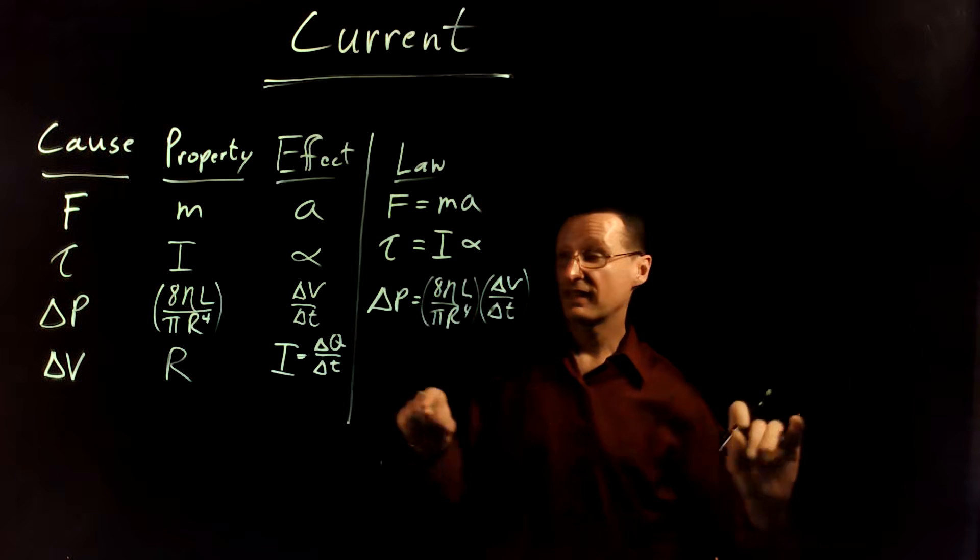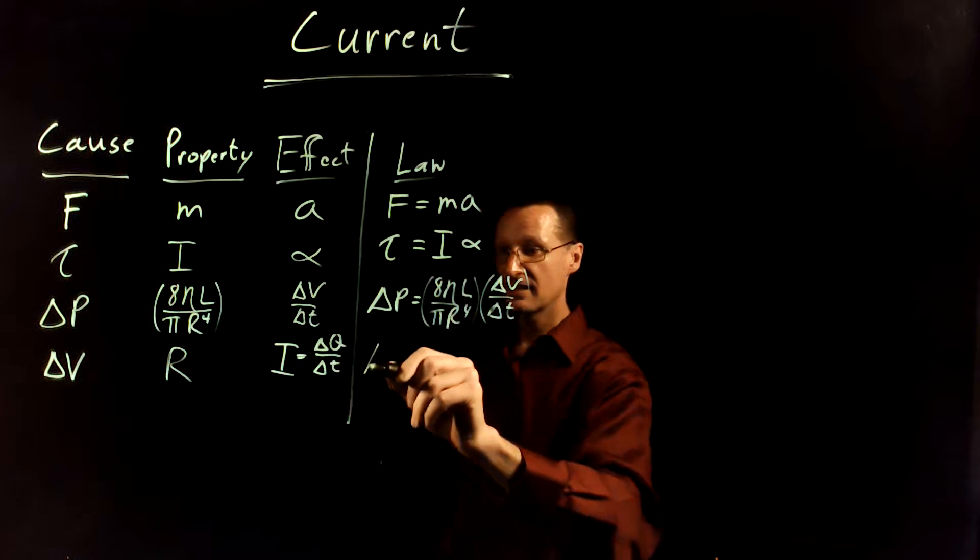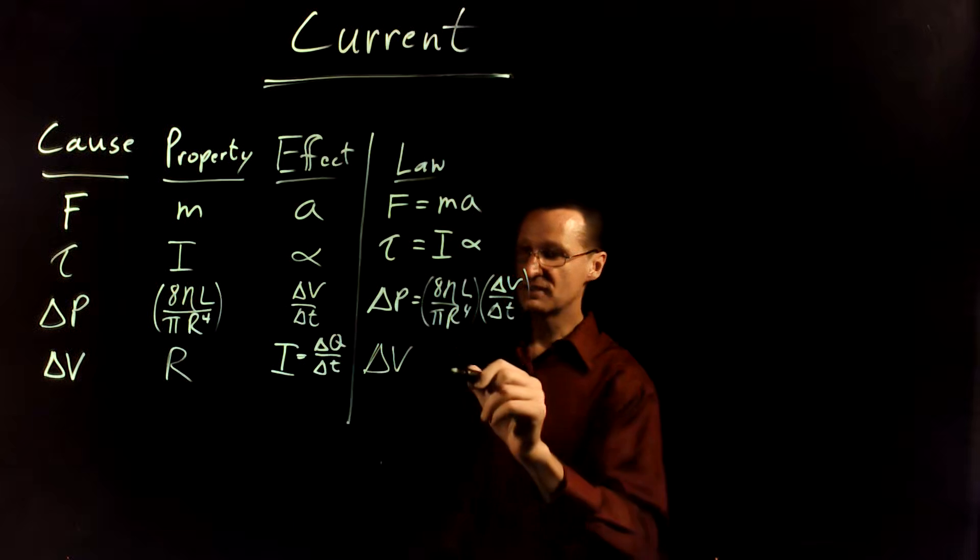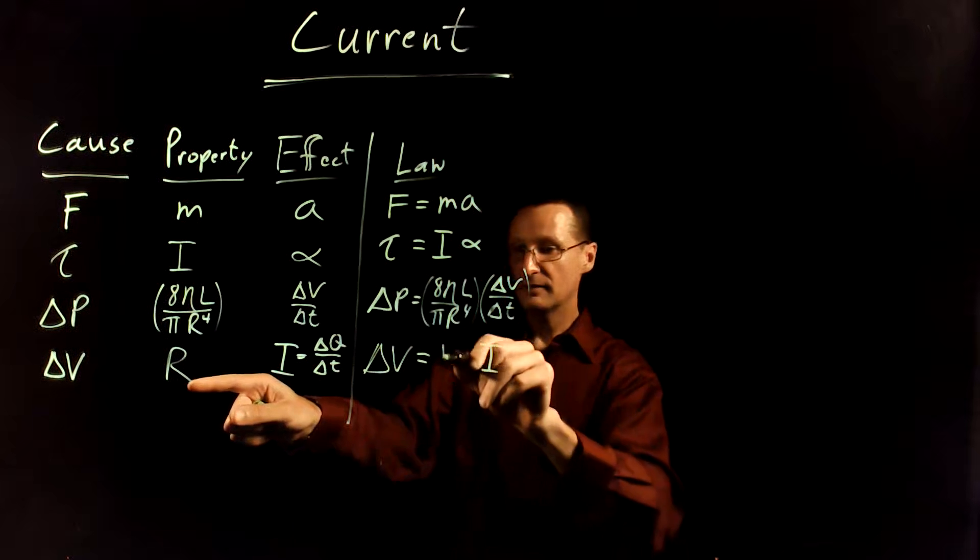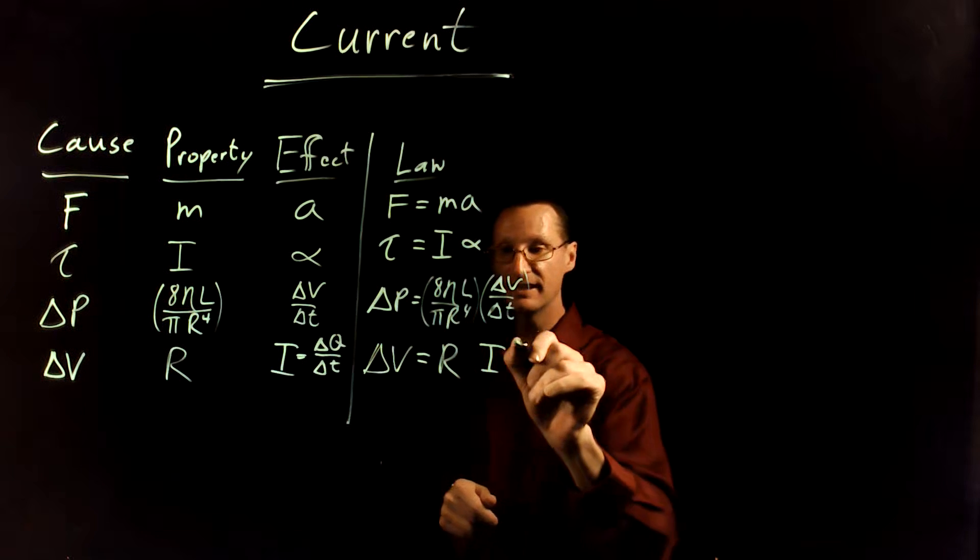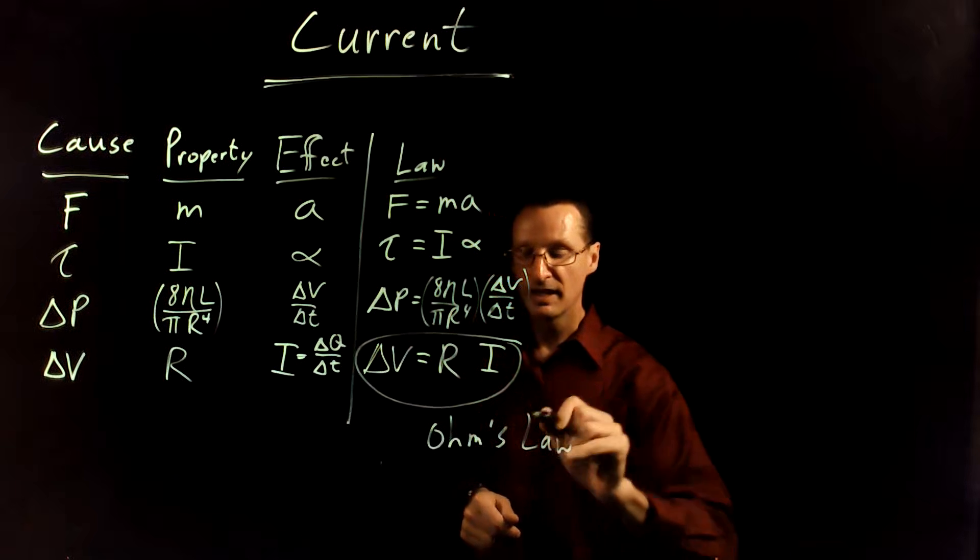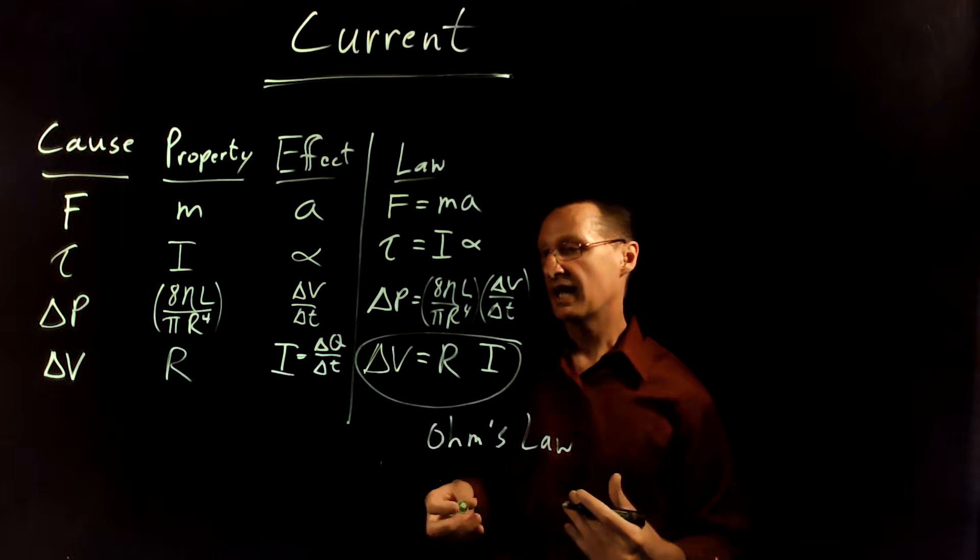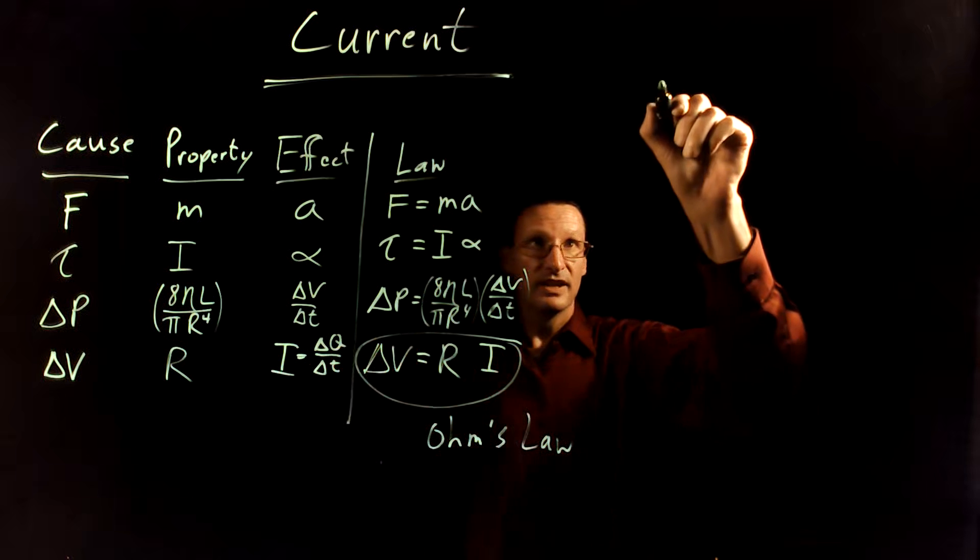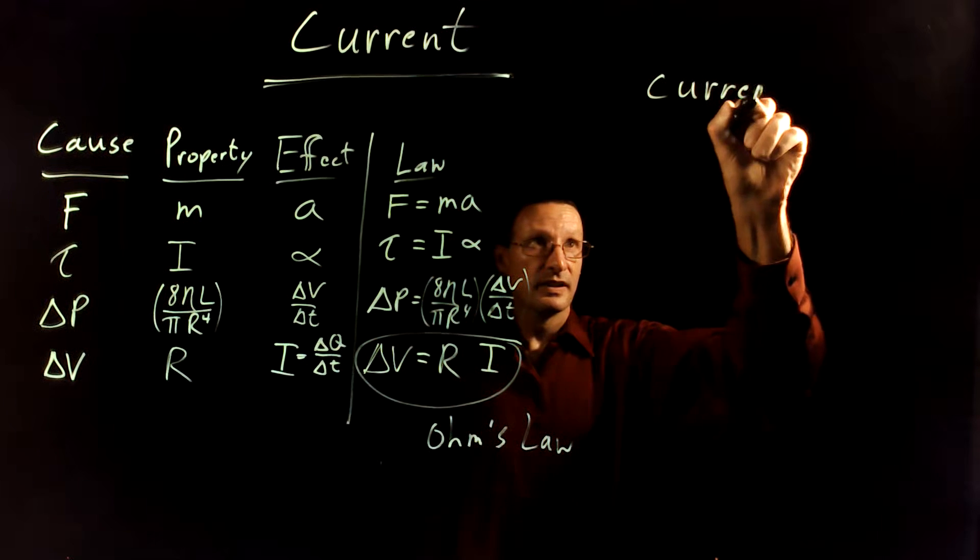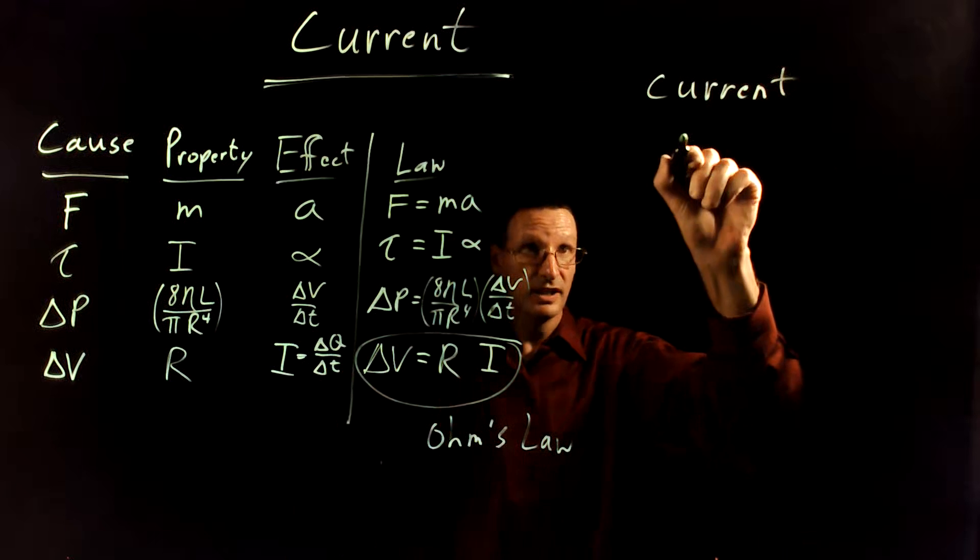There's a property in the middle called the resistance—a property of the wire or material that the current is traveling through. As you guessed, there's a law that goes with this: the voltage difference is equal to the property, the resistance, times the current. This is what we call Ohm's law. This helps us define what current is, although current is defined independent of Ohm's law. What is current? Current is the amount of charge that's passing a certain point per time interval—it's really a flow rate.